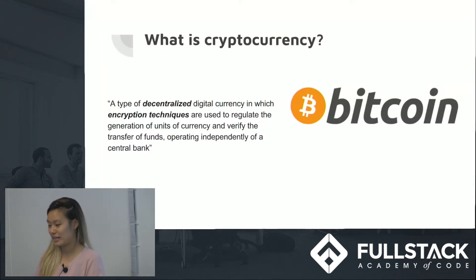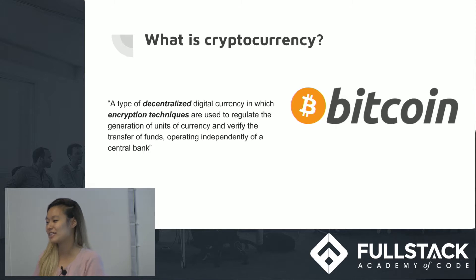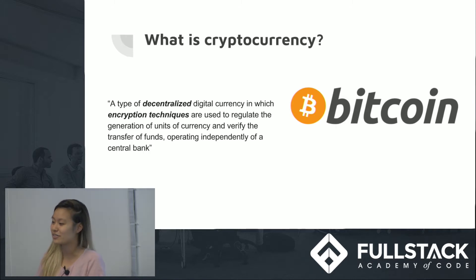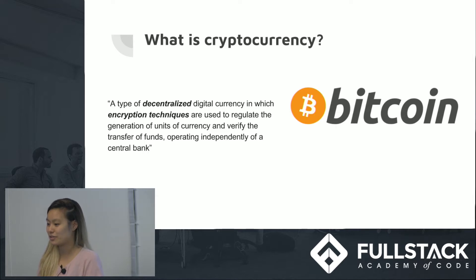So what is cryptocurrency? Google tells me that it is a type of decentralized digital currency in which encryption techniques are used to regulate the generation of units of currency and verify the transfer of funds.